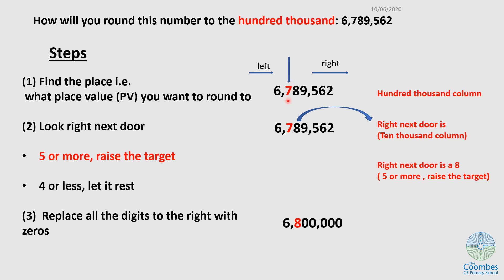Then I look right next door. Right next door to my target digit is an eight. Which of these am I going to apply? Eight is five or more, it's more than five. When it's five or more, I'm going to raise my target by one. So I'm going to raise the seven to an eight here, and then the rest, I apply zeros. If I round to the nearest hundred thousand, it should be 6,800,000.